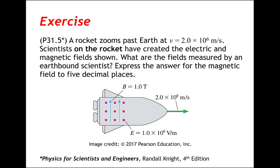In this problem we have scientists on the rocket creating and measuring two fields: the electric field and a magnetic field. We know from Maxwell that there is a relativity of fields. Observers on Earth would measure a different magnetic field and possibly a different electric field due to the relative motion of the rocket and the observers on Earth.